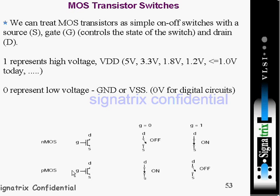Similarly, for a PMOS transistor: when you are applying zero, the switch is closed and it is conducting. When you are applying one, the switch is OFF and it is not conducting. This is the simple MOS transistor switch behavior.